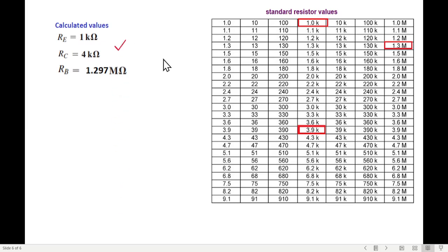So this is okay. Then RC we calculated 4 kilo. Here 4 kilo is not available. So we use 3.9, which is the nearest to 4 kilo. Then RB 1.297, nearest was 1.3 mega. So we use 1.3 mega.